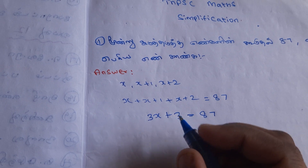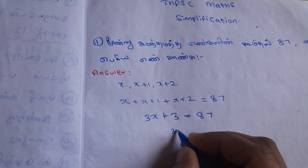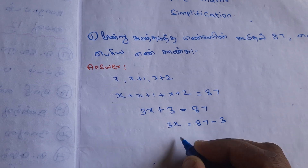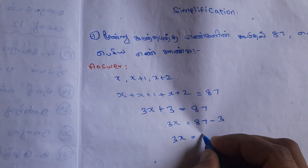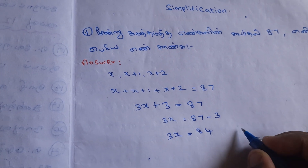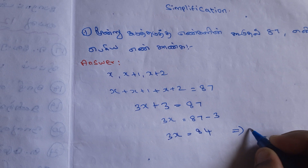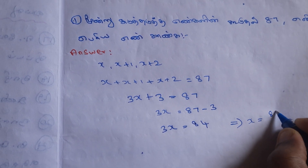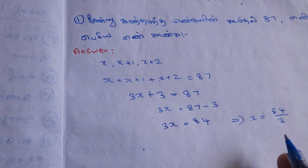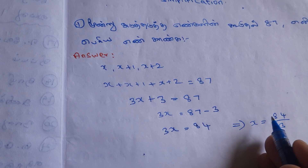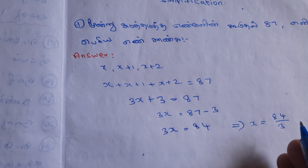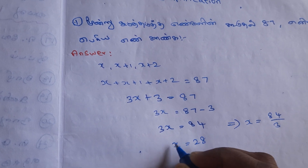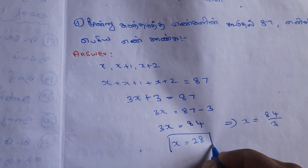This is how we solve for x. Let's write: 3x is equal to 87 minus 3, then 3x is equal to 84. If 3x equals 84, then x is equal to 84 divided by 3, which gives us x equals 28.